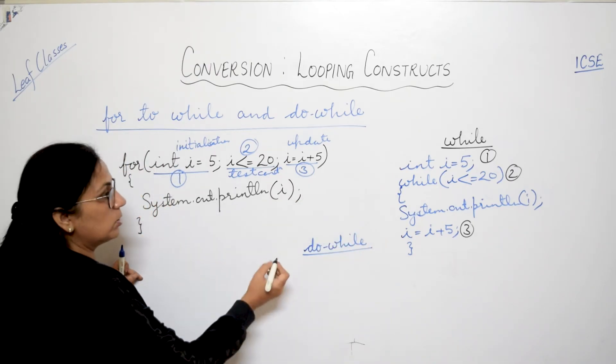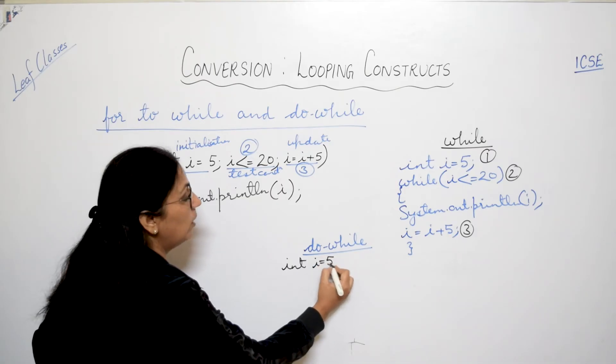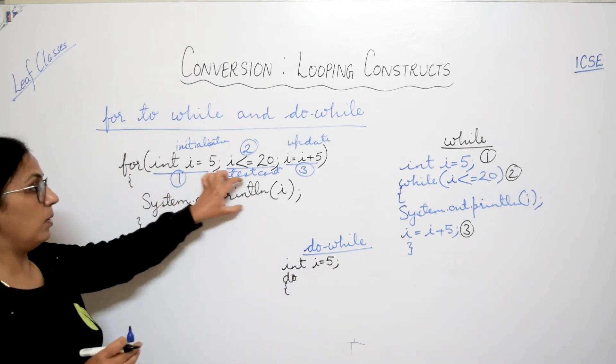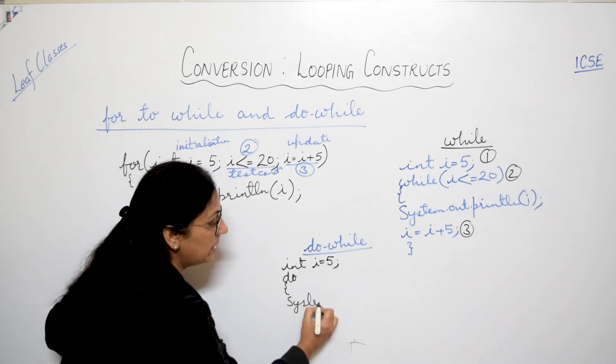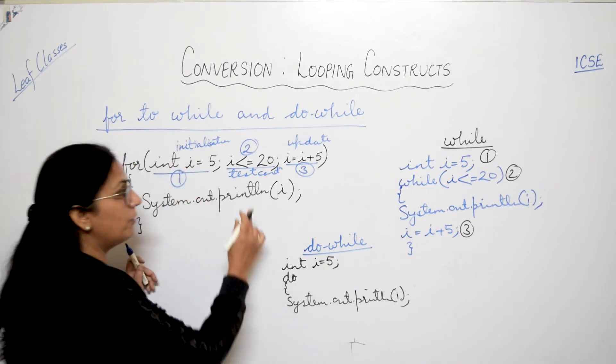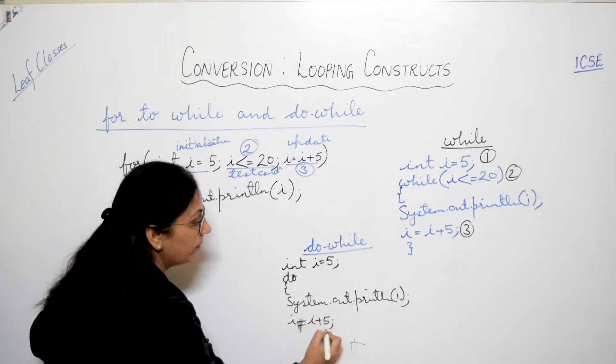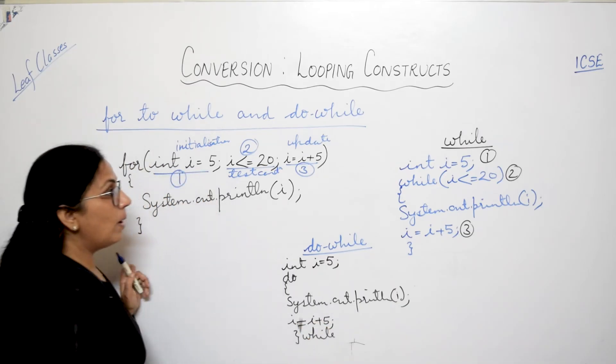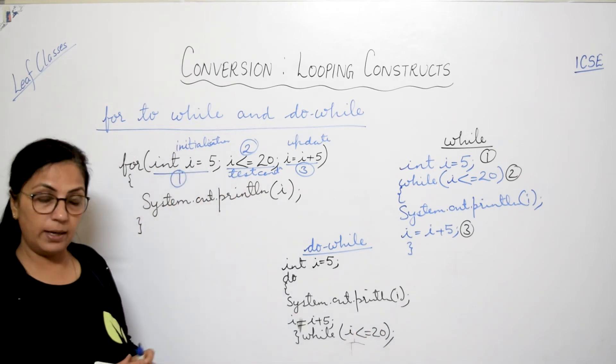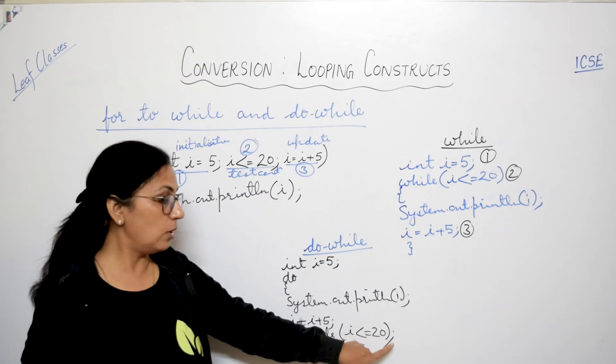Now let me write for do while also. In do while also exactly like while, the initialization is given before starting of the do while loop. So this, and then you start the loop. Do, or do the body of the loop. Body me kya hai? Only if one statement is there you will write here. That statement system dot out dot println i, and update expression will be given inside the loop i equals to i plus 5. And here children what you have to write? While. While ke saath condition denge. While i is less than equals to 20, and put a semicolon over here. Now in this while, no semicolon. In do while after the closing bracket, after the condition, you have to put semicolon.